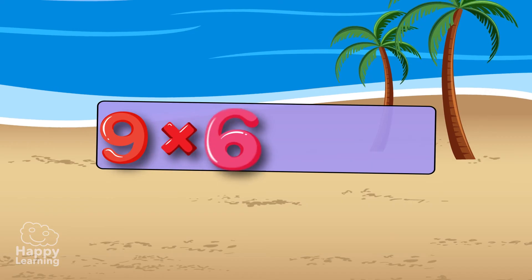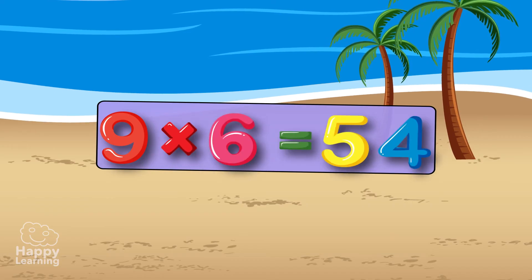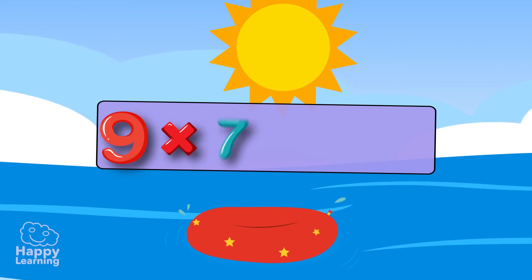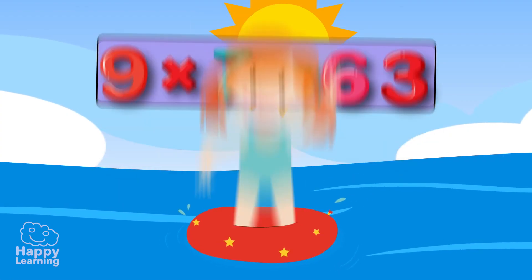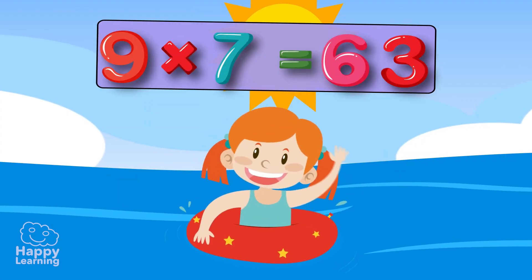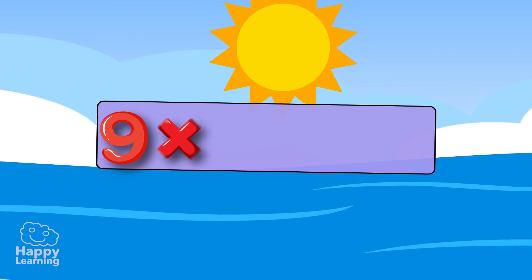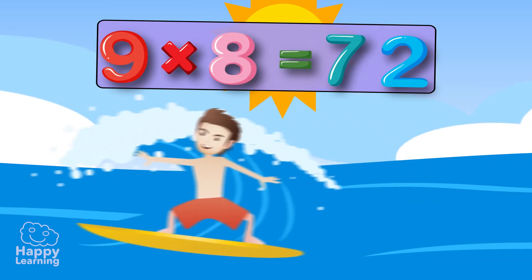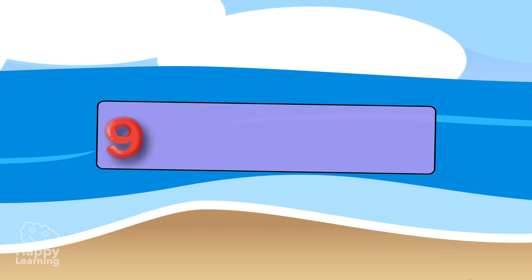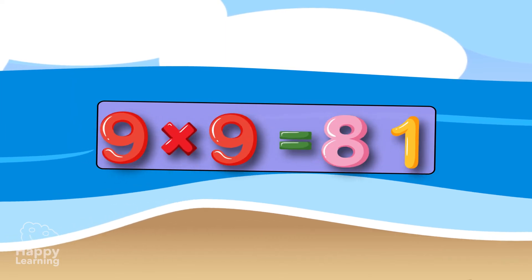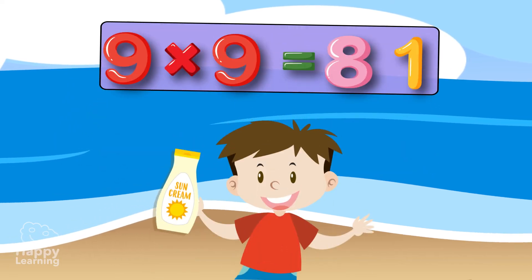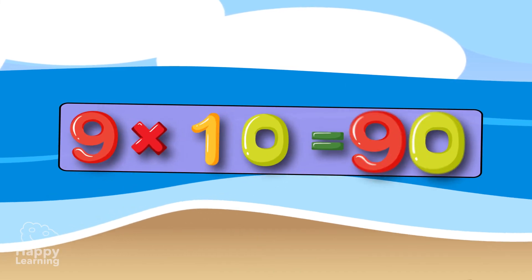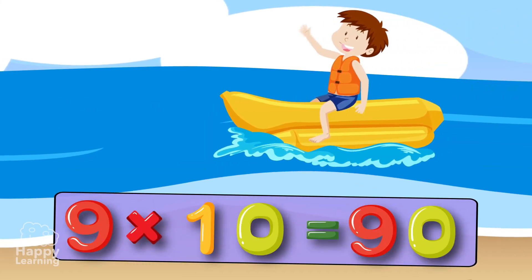Nine times six: fifty-four. Nine times seven: sixty-three. Nine times eight: seventy-two. Nine times nine: eighty-one. Nine times ten: ninety.